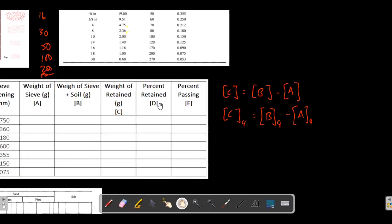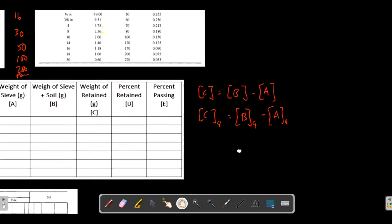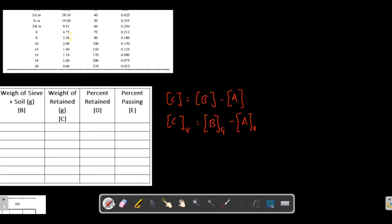The next one is the percent retained - how much of the soil sample is retained at a specific sieve number. What you do here is calculate the percentage. Weight retained C, which is D, is equivalent to C divided by your total weight W times 100 percent.